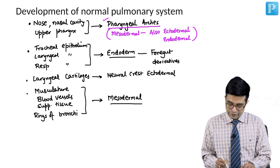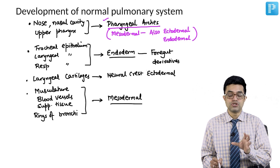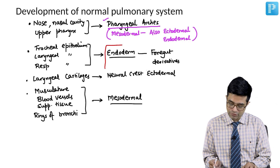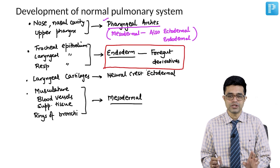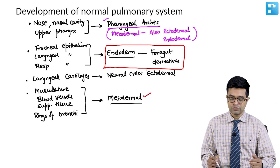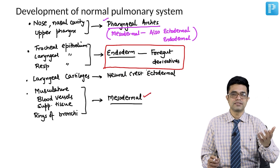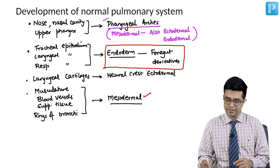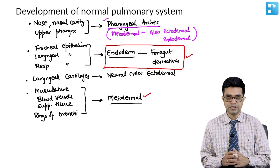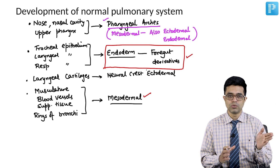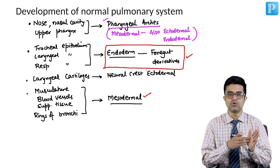Majorly, if you have to choose one, the majority of the respiratory tract is derived from endoderm — a foregut derivative. That is the classical teaching. However, there is significant contribution from mesoderm also, and very rarely some components may be derived from ectoderm as well. So if an MCQ asks you in superspeciality, the answer will be foregut endoderm.